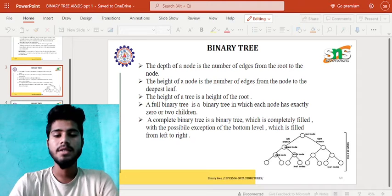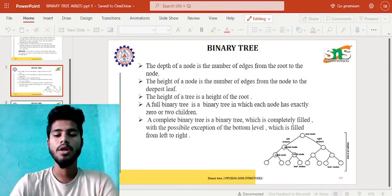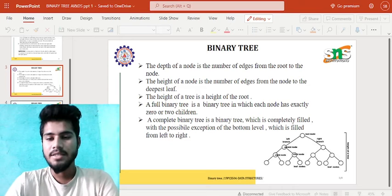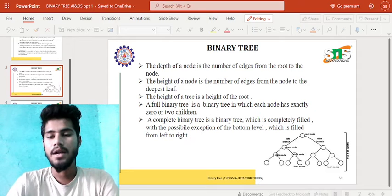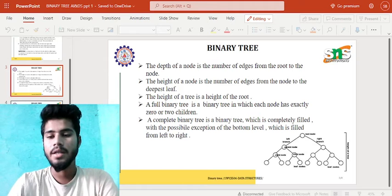A full binary tree is a binary tree in which each node has exactly zero or two children. A complete binary tree is completely filled with the possible exception of the bottom level, which is filled from left to right. In this diagram we can see the first node has a left side and also the right side, with child nodes, root node, and leaf nodes.